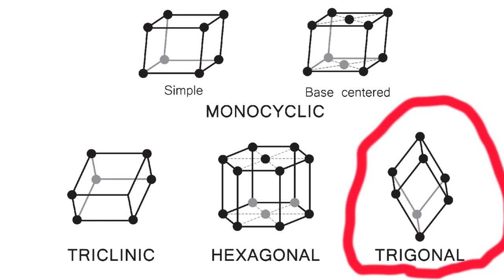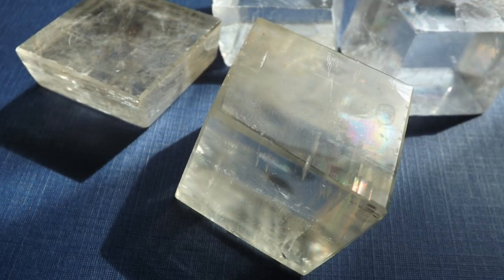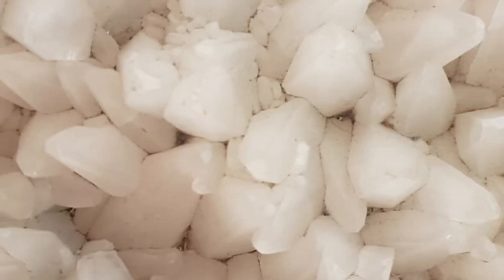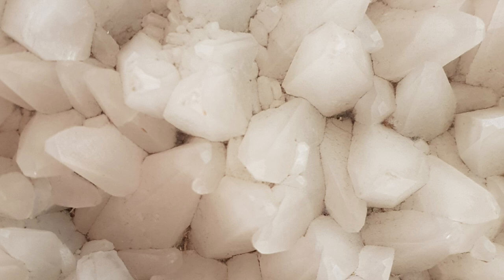Now, some good examples of minerals that crystallize in the rhombohedral form include things like calcite. Calcite is a mineral commonly used in construction materials and has a noticeable rhombohedral shape in many situations. Also, dolomite. Dolomite is a mineral that is similar in appearance to calcite, but has a different chemical composition.